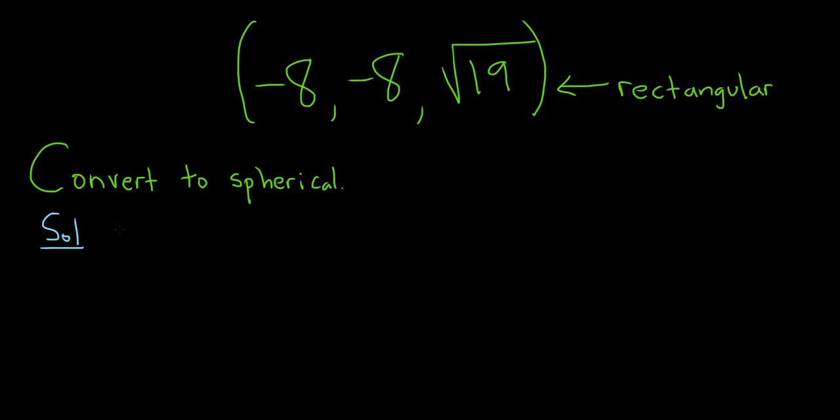The formulas to convert rectangular to spherical are as follows. We have that rho squared is equal to x squared plus y squared plus z squared. Then we have that the tangent of theta is equal to y over x.